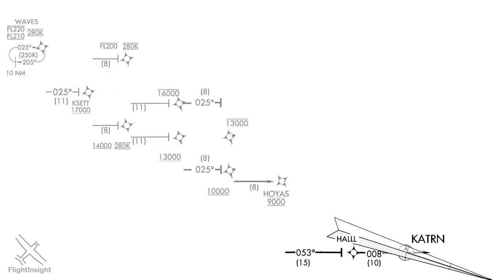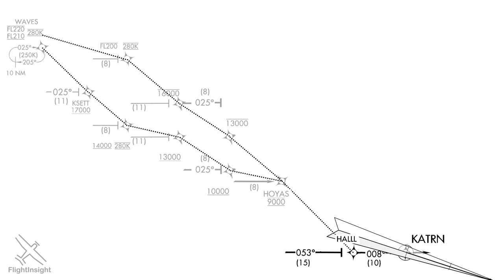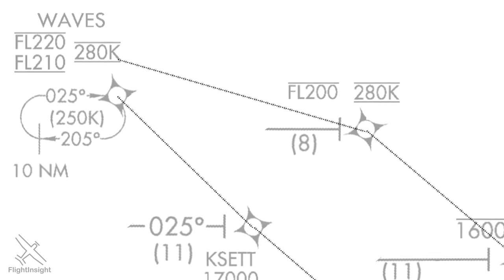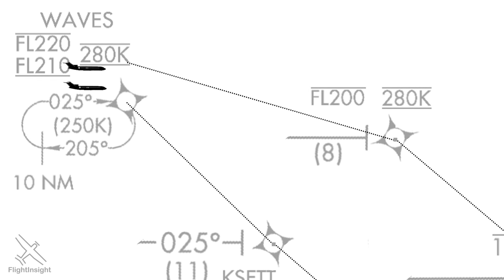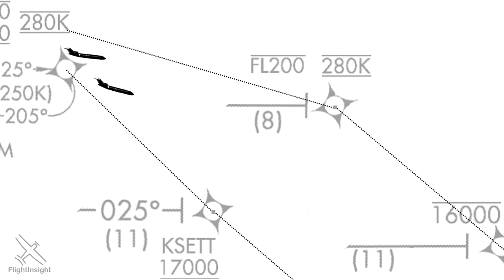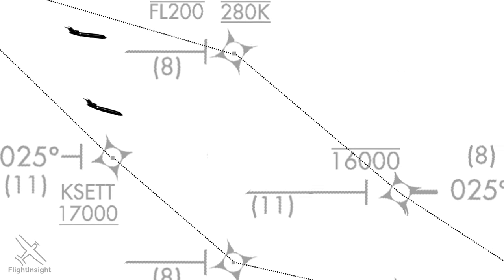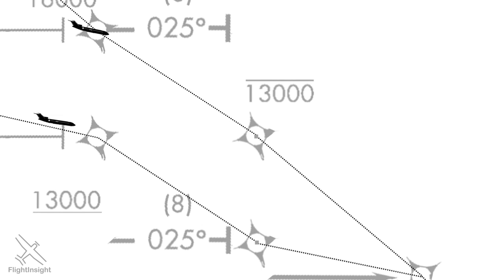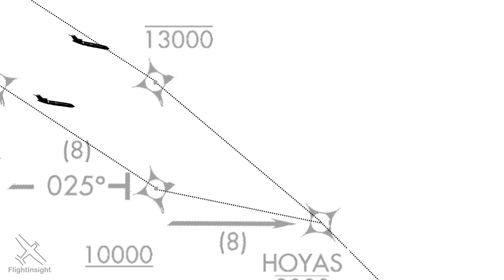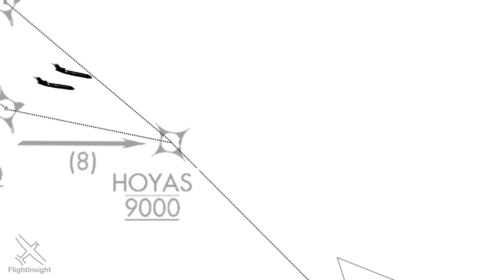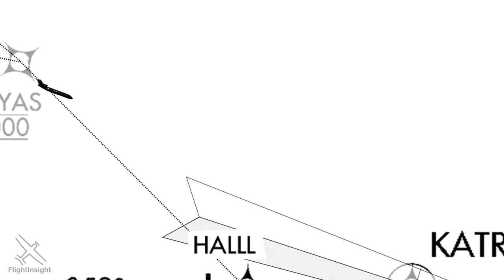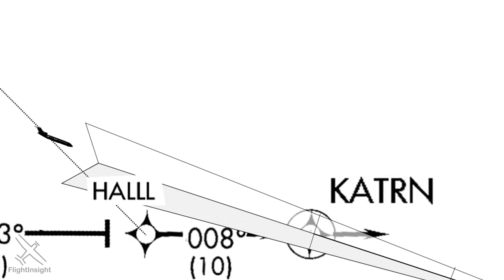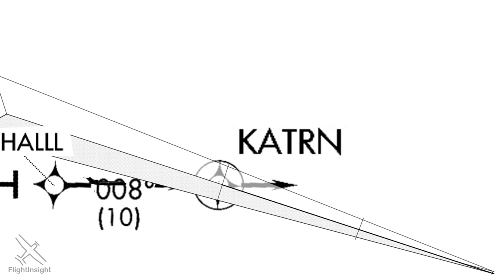Let's look at a vertical picture of the arrival. The dashed lines represent our altitude restrictions. Outside the lines would be either too low or too high, but inside the lines, it's the pilot's discretion how the descent is managed. Two aircraft could fly the same arrival with one staying higher than the other, or flying a bit faster or slower. By the time aircraft reach Hoyas, though, they'll all be at 9,000 feet, then start the descent to intercept the glide slope and fly the ILS down to Runway 1 at National.